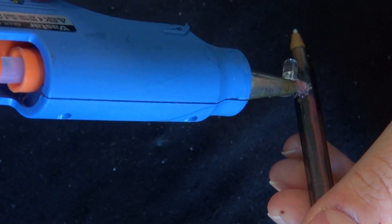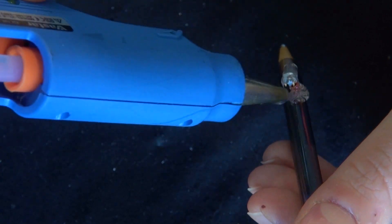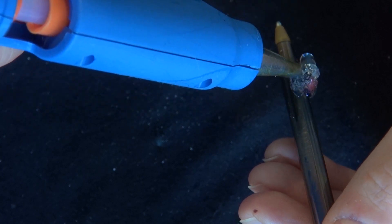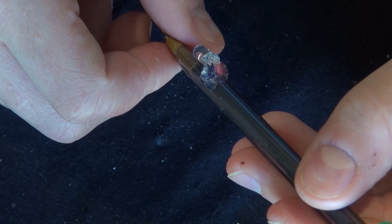Now put some glue where the LED is at the end of the pen, so it stays more firm and secure. Now it is done.